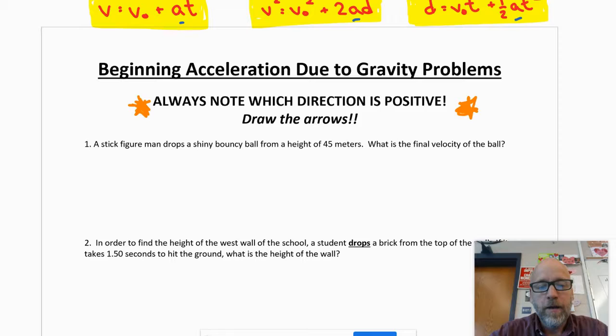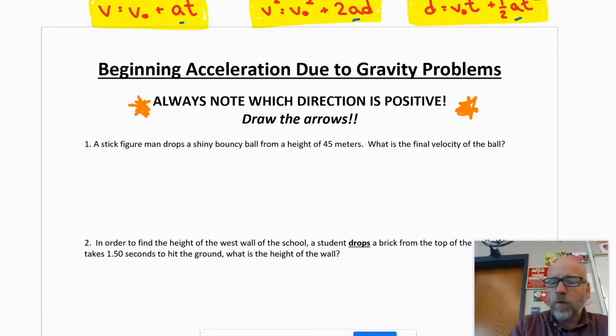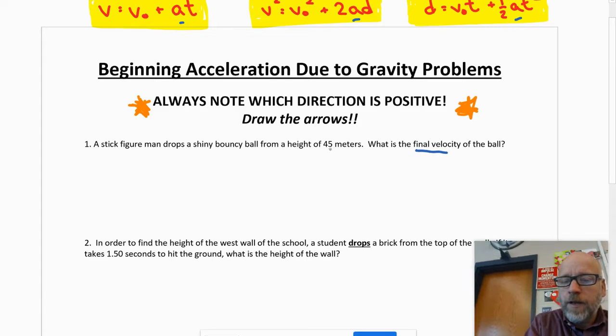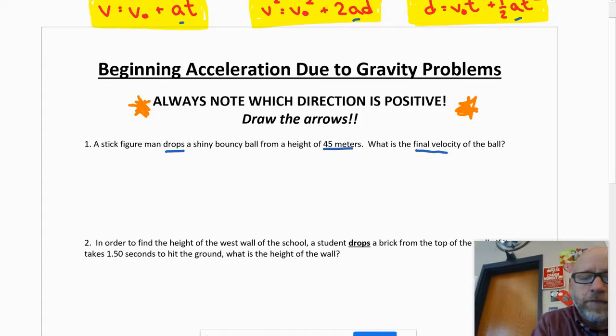A stick figure man drops a shiny bouncy ball from a height of 45 meters. What is the final velocity of the ball? Now when I look at my information, I'm not sure I have enough. Let's check it out. I'm gonna make a chart so I've got V naught, V, D, A, and T.